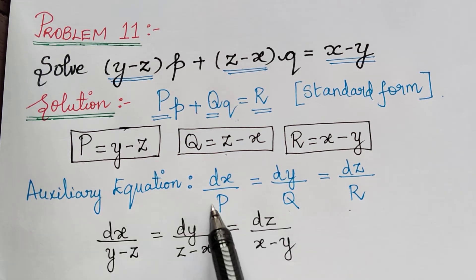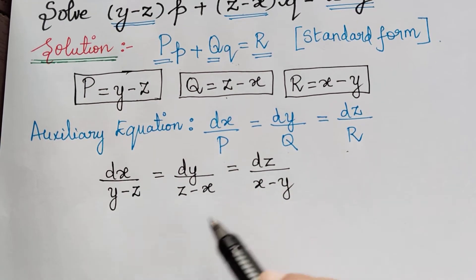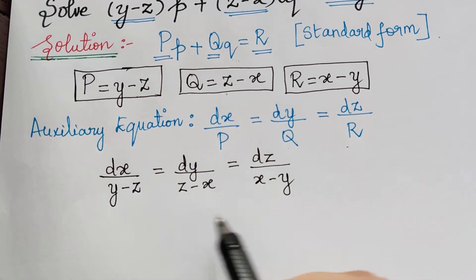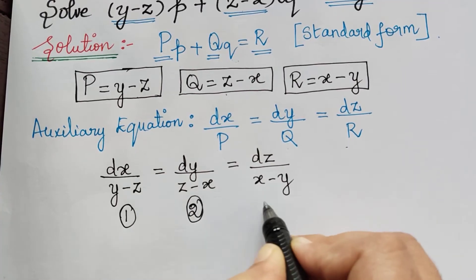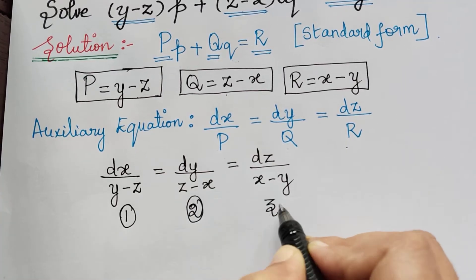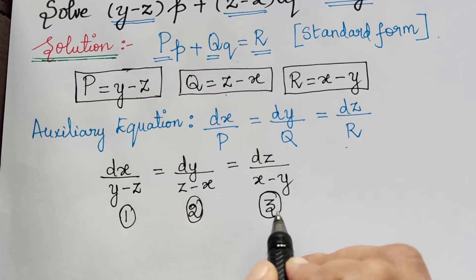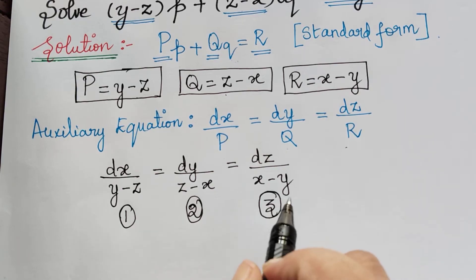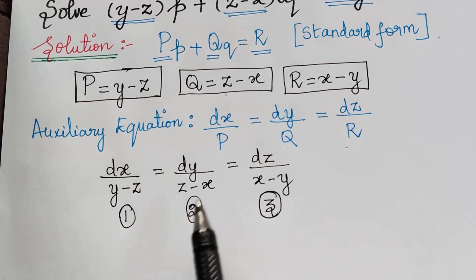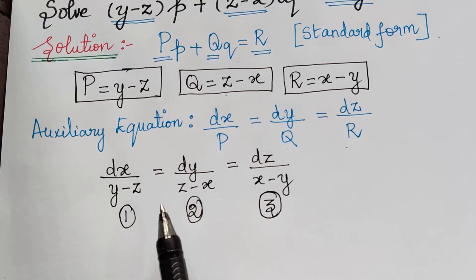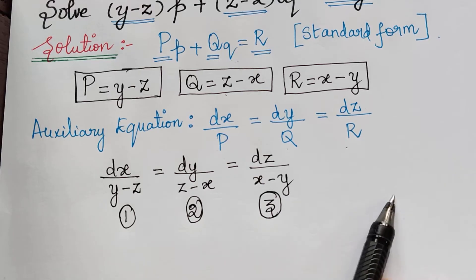After substituting the values of P, Q, and R, this is what we obtain. We mark this as 1, this as 2, and this as 3, as we have done in our previous problems. After this, comes the task to select whether we have to use the method of grouping or the method of multipliers.